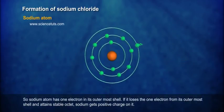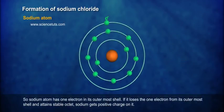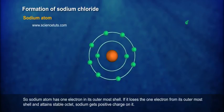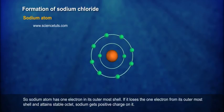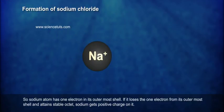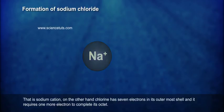So, the sodium atom has one electron in its outermost shell. If it loses that one electron from its outermost shell and attains a stable octet, sodium gets a positive charge on it — that is, the sodium cation.